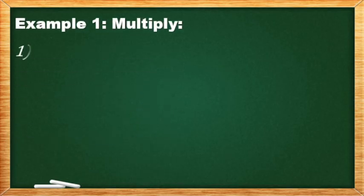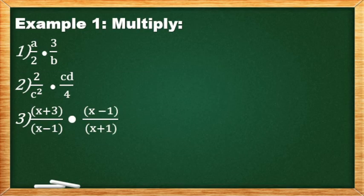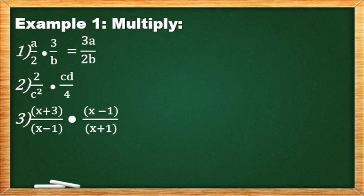Example, multiply — we have 3 given. Number 1: A/2 times 3/B. Wala tayong makakancel. Pagtabihin natin. So, 3A/2B. This will be the final answer, kasi wala naman silang common factor ang numerator at ang denominator.